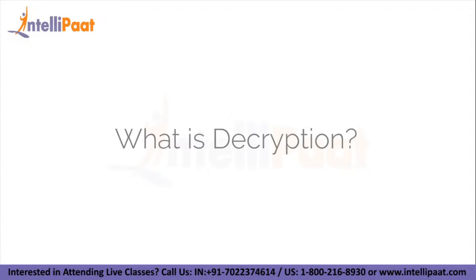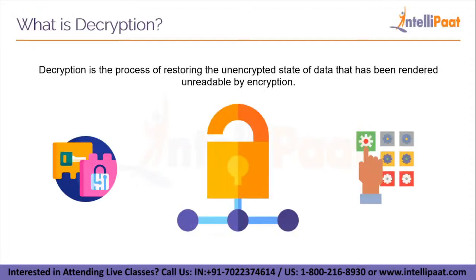Now let us talk about decryption. Decryption is a process of restoring the unencrypted state of data that has been rendered unreadable by encryption. The system extracts and converts the garbled data into sentences and visuals that are understandable, both by the reader and by the system during decryption. The process of decryption can be done manually or mechanically, and it can also be done with a combination of keys and passwords.